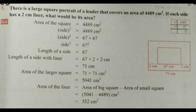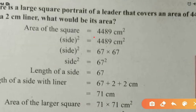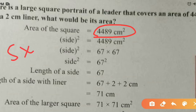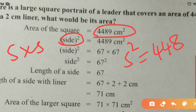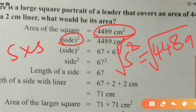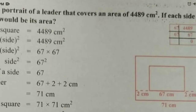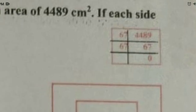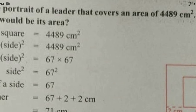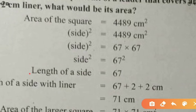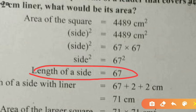The formula for area of a square is side squared. So side squared equals 4,489. To find the length of one side, take the square root. Using the prime factorization method, the square root of 4,489 is 67. So the length of one side of the square portrait is 67 centimeters.